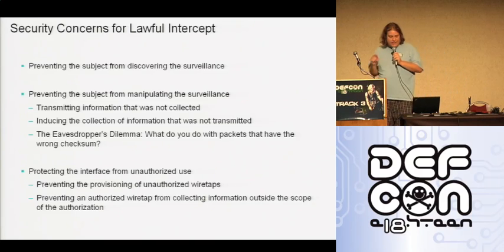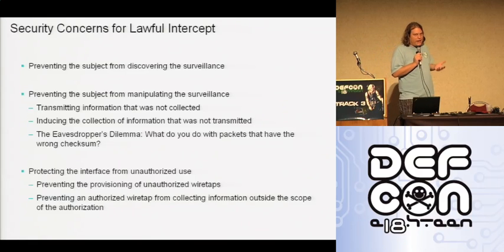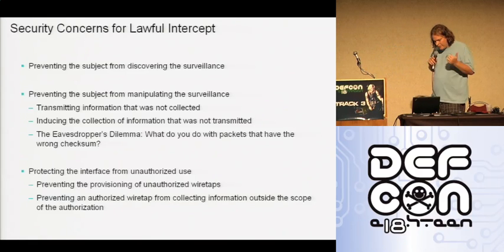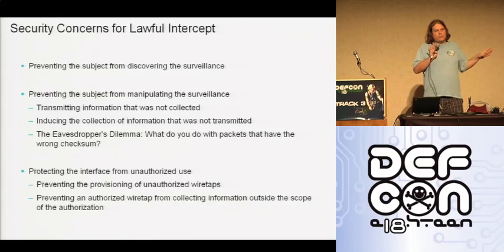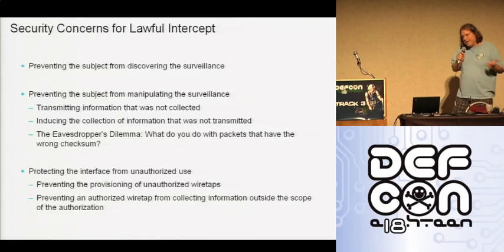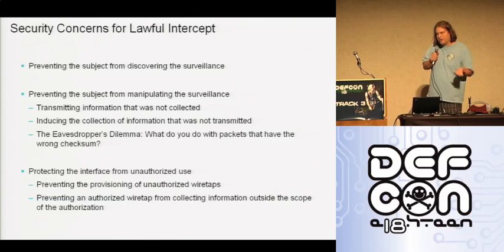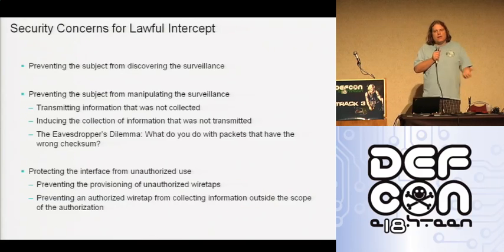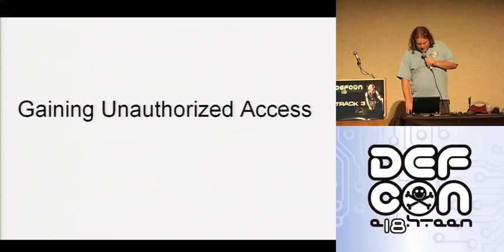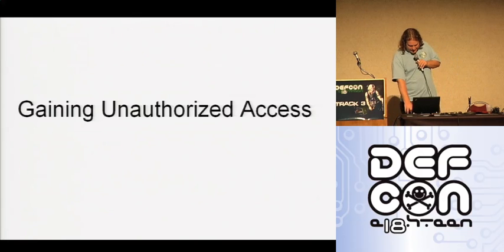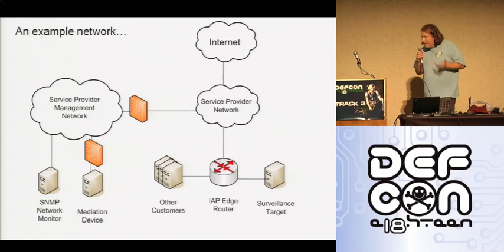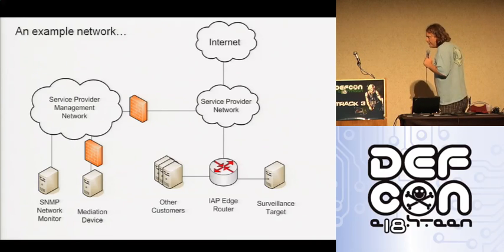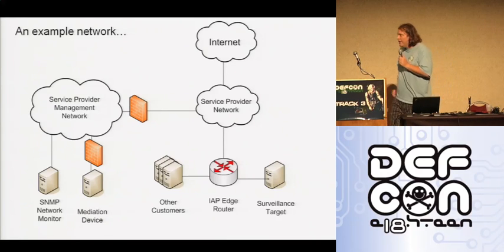What I'm covering in this talk is unauthorized access. There are two kinds to be concerned with: first, ensuring that people not authorized to provision a wiretap cannot do so; and second, ensuring that people who are authorized to provision a wiretap only collect the data they were actually authorized to collect — if they got a warrant to look at Bob's stuff, they only collect Bob's stuff and not Carol's. So let's talk about gaining unauthorized access. Here is a network map — an example network that shows how this looks when actually deployed in an ISP's environment.